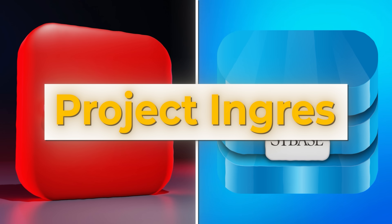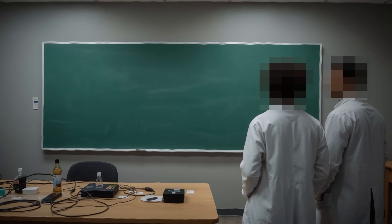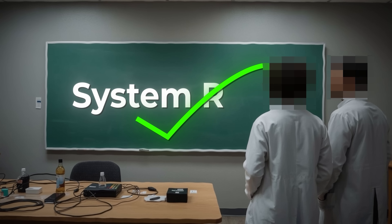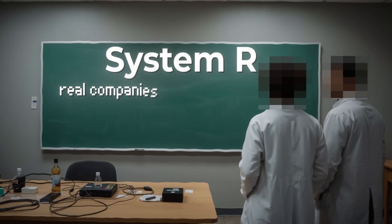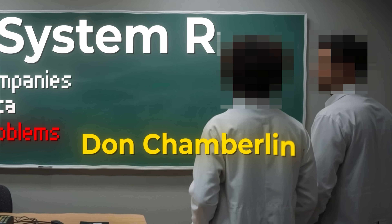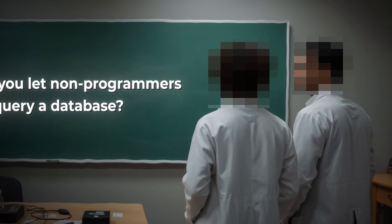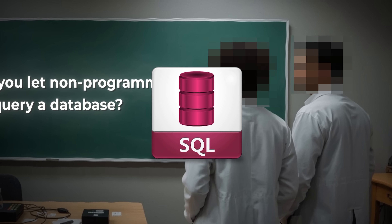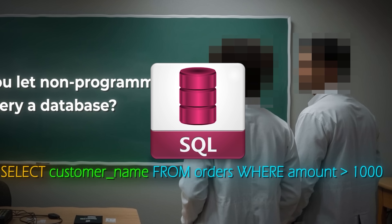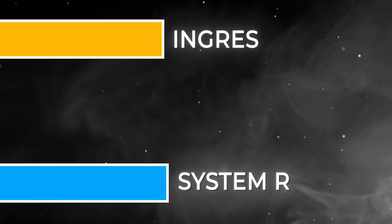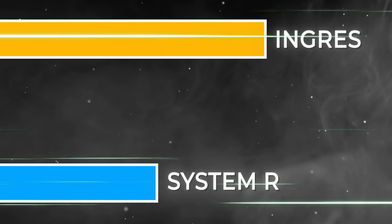Meanwhile, deep inside IBM's San Jose Research Lab, a small team finally gets permission to explore Codd's ideas. Their project: System R. Unlike the academic Ingres, System R is designed for industrial strength — real companies, real data, real problems. Two researchers, Don Chamberlain and Raymond Boyce, face a crucial challenge: how do you let non-programmers query a database? Their answer becomes the most important computer language you've never heard of — SQL, Structured Query Language. 'SELECT customer_name FROM orders WHERE amount > 1000' reads like English, but it's actually a mathematical query that can search millions of records in seconds. The 1970s become a decade-long race between Ingres and System R, both proving that Codd's vision isn't just theory — it's the future.